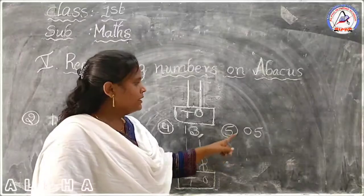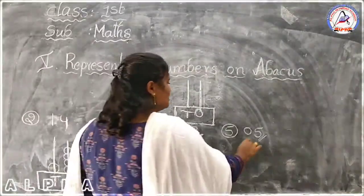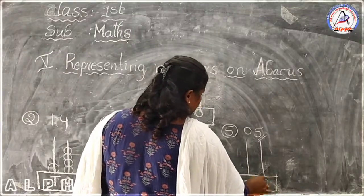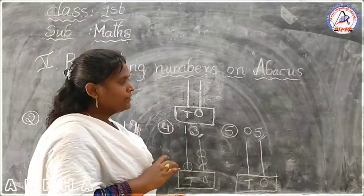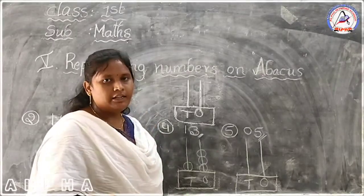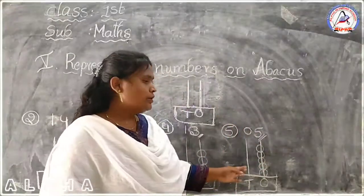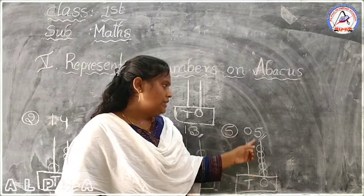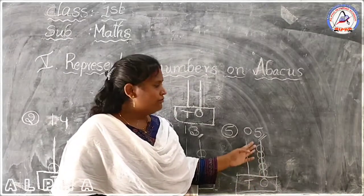Let's look at our next example. What is the given number here? You have only a single digit — 5. It means the given number is 5. Now I am representing this number on the Abacus. In the Abacus you have 2 rods: the ones rod and the tens rod. Here you have only a single digit, so there are no tens — only ones. How many ones are there? Five. So in the ones rod, I have given 5 bubbles. It means here you have the number 5.